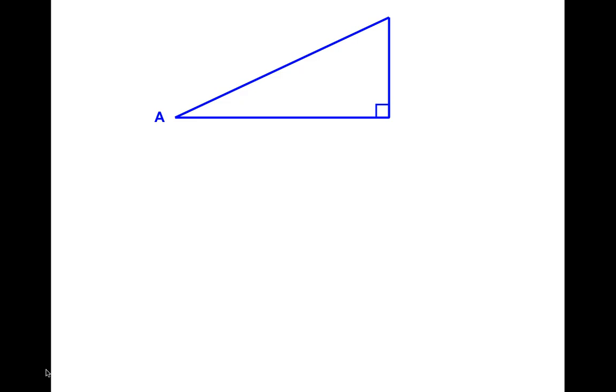We're going to take a look at problems where we are using right triangles. Here we have a right triangle, and we need to be able to label the sides correctly. So here is the hypotenuse. The hypotenuse is always the longest side in a right triangle, and it's across from the 90-degree angle.